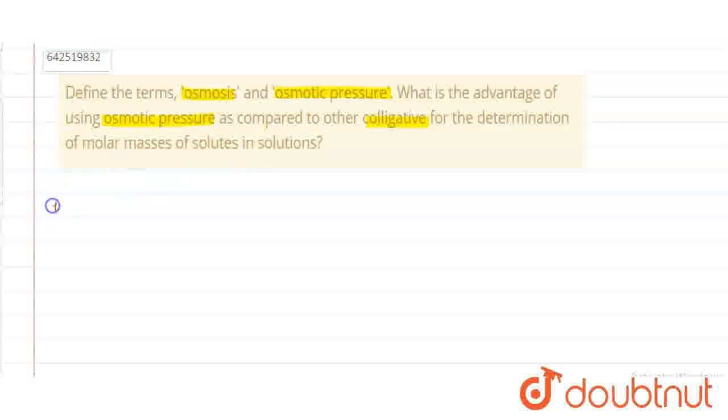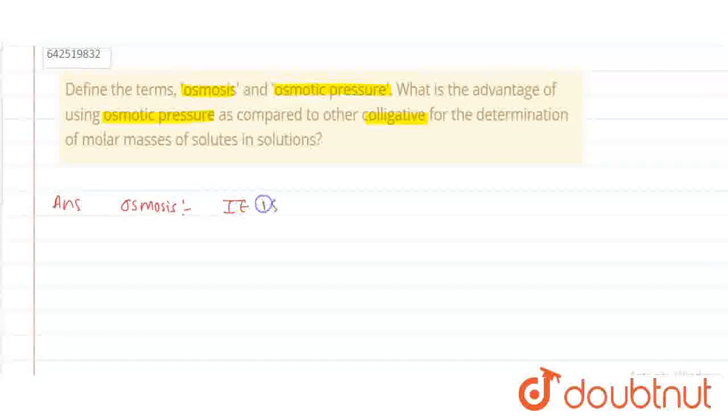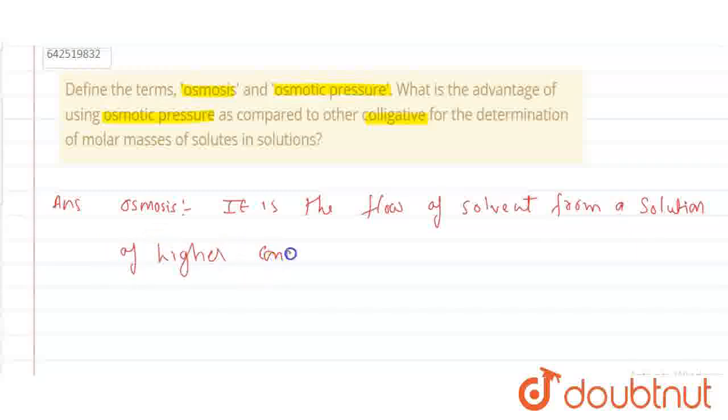So first we need to define osmosis. It is the flow of solvent from a solution of higher concentration to lower concentration through a semi-permeable membrane.